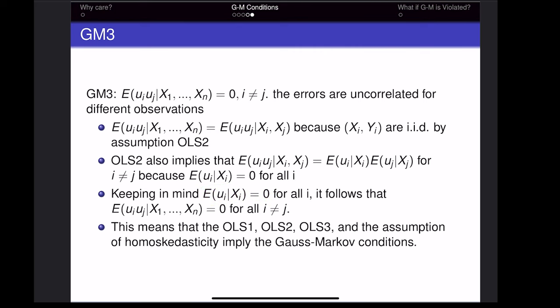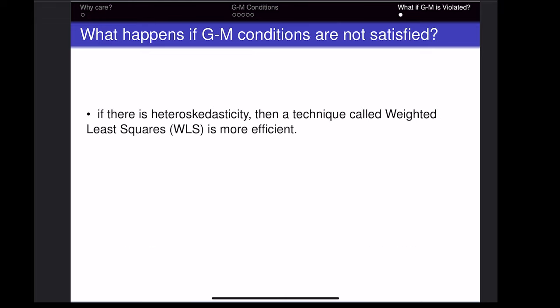If the OLS assumptions are true and we also have homoscedasticity, then we have the Gauss-Markov conditions. If the Gauss-Markov conditions are not satisfied — specifically if we cannot get the homoscedasticity assumption — there is a different technique called weighted least squares to estimate the slope and intercept. It's more efficient, and if we have heteroscedasticity, weighted least squares may give better results.